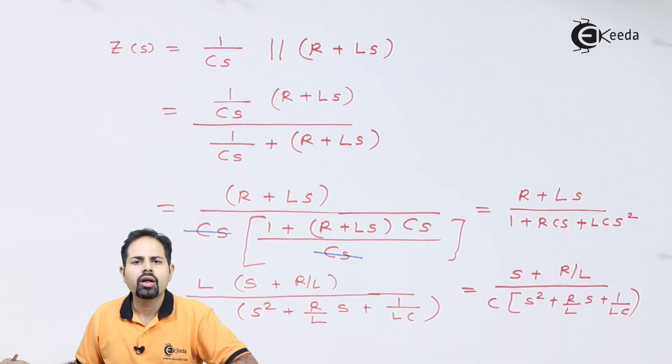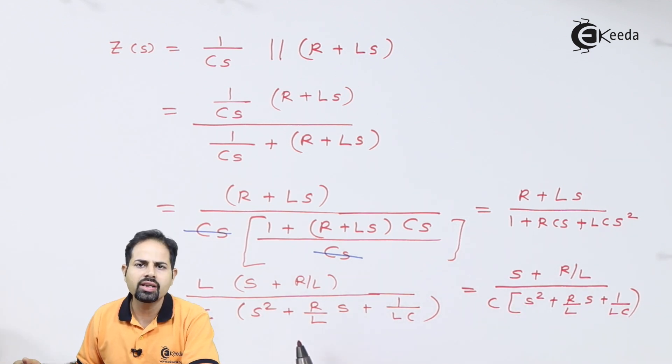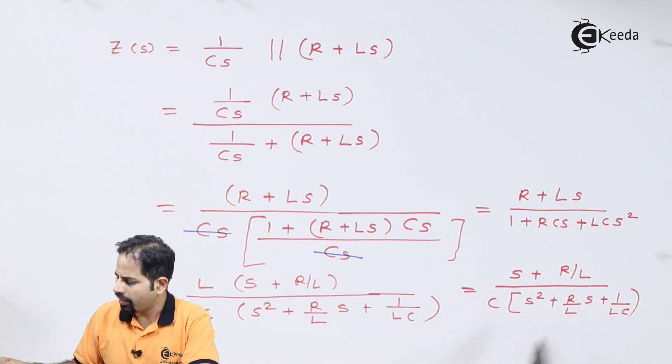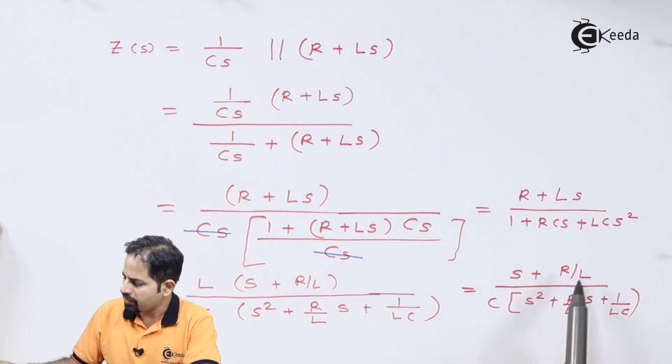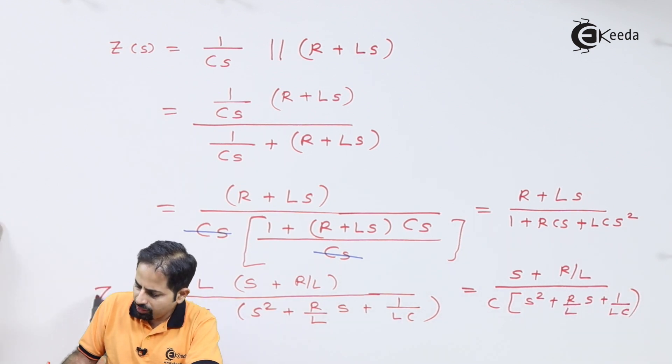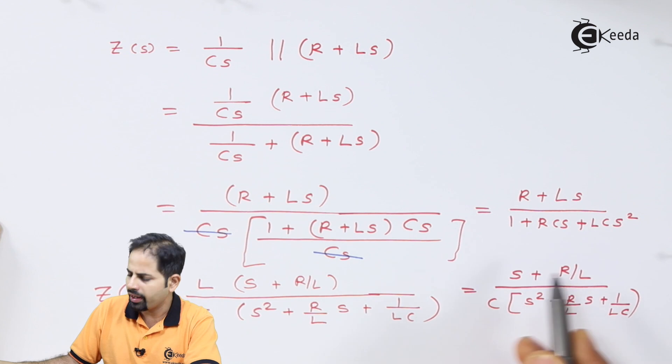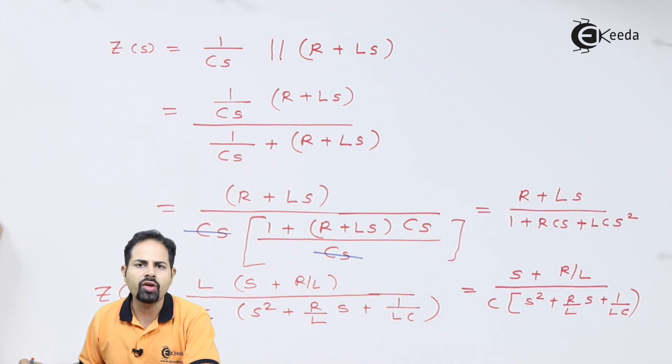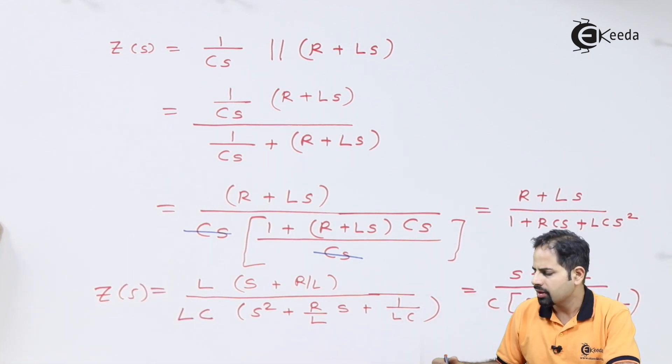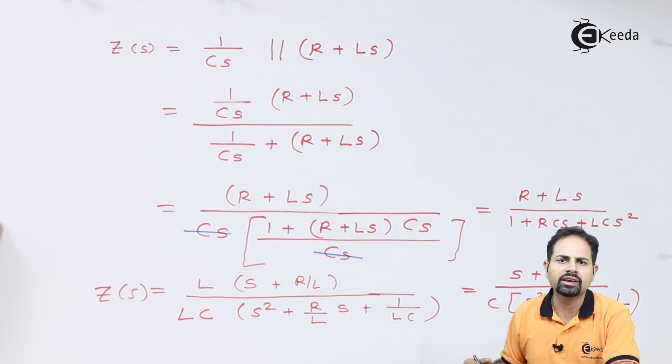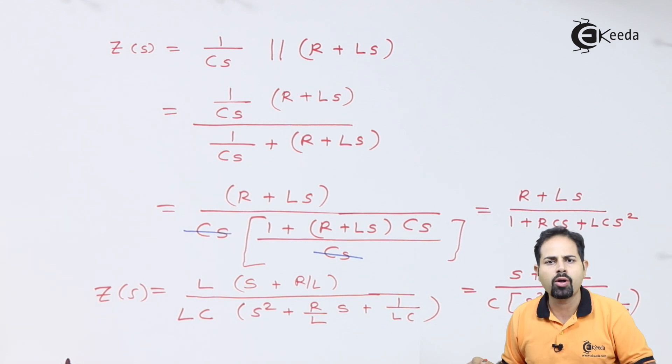And now suppose you are given the values of L, C and R as 1 - 1 Henry, 1 Farad and 1 Ohm, every value 1 - this will become s plus 1 here also there will be 1, then s square plus s plus 1. And this is nothing but your Z(s). So you will get this complete term in terms of s and by using Laplace inverse transform technique you can also get it in time domain. So this is what is required answer and you got it.